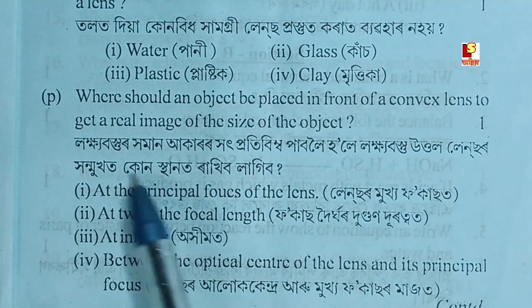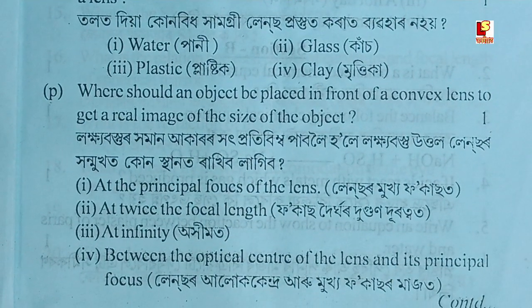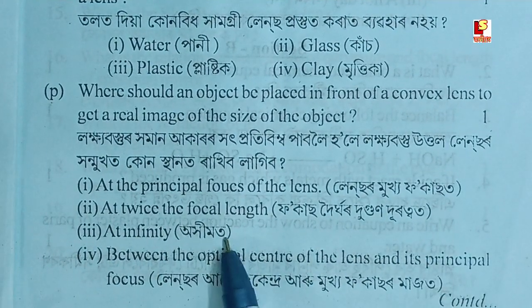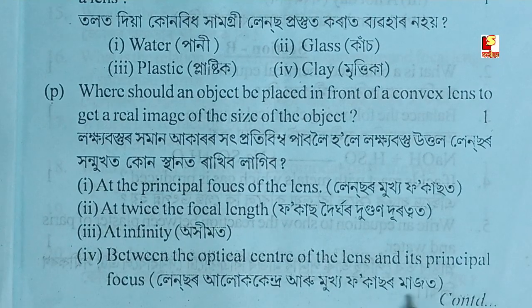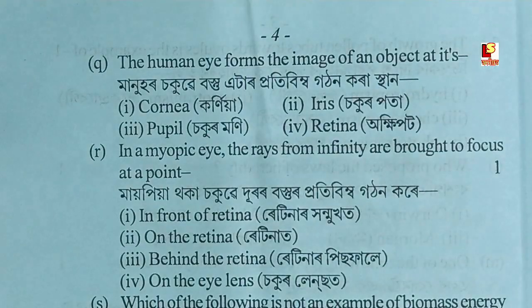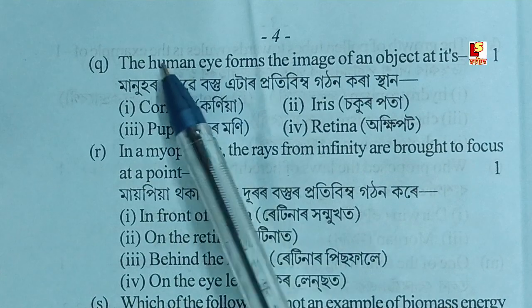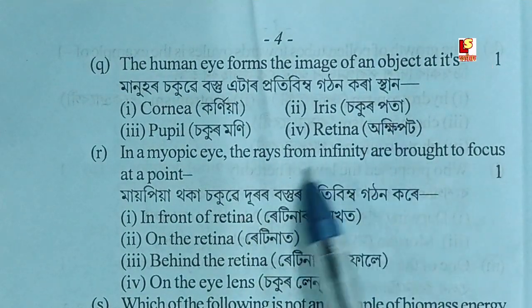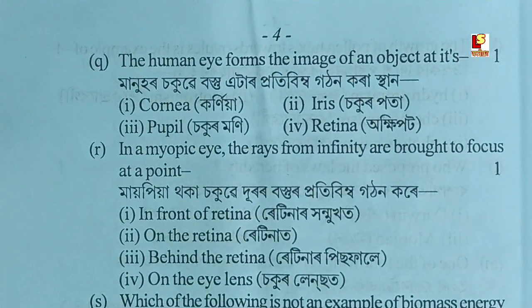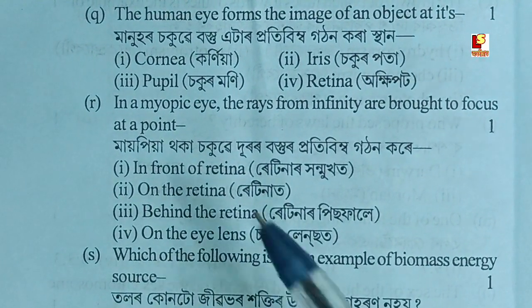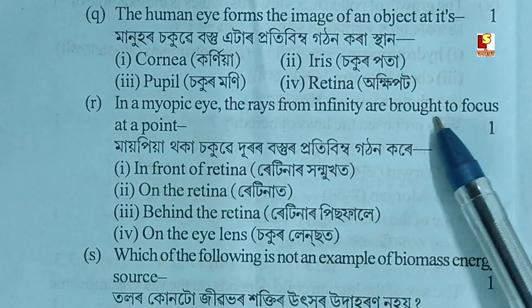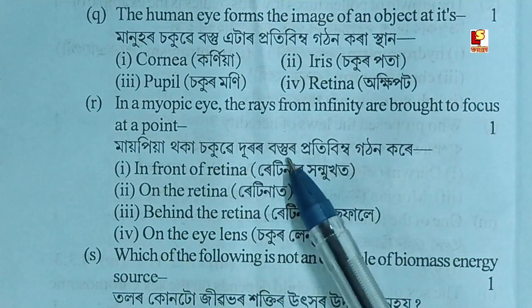The object should be placed at the centre of curvature or at twice the focal length of the lens. The human eye forms the image of an object at its retina. In a myopic eye, rays from infinity are brought to focus at a point in front of the retina.